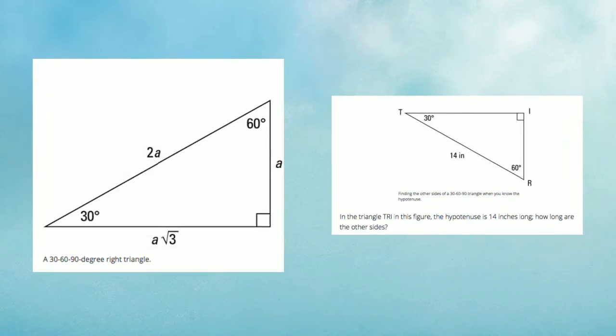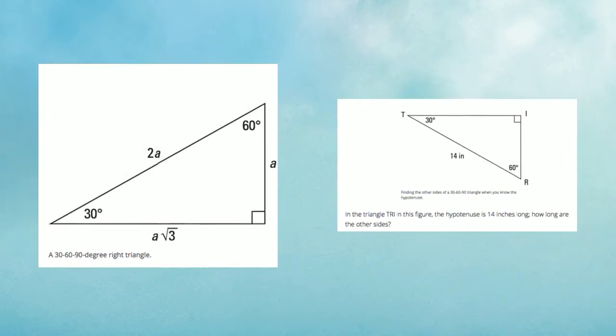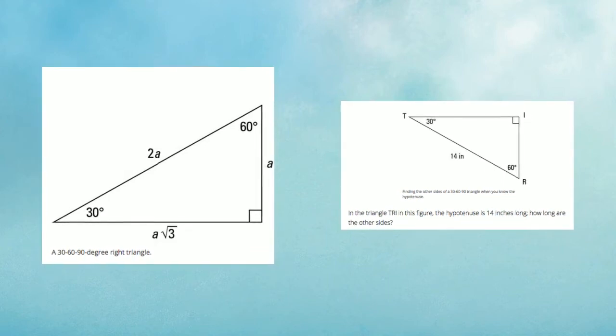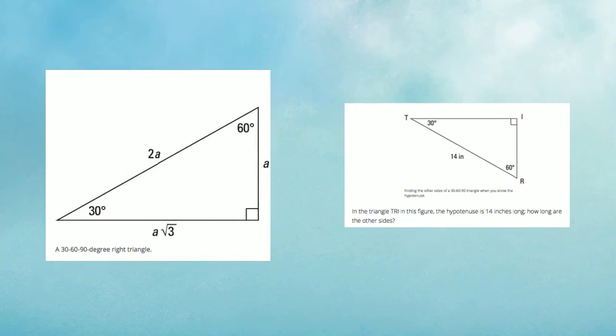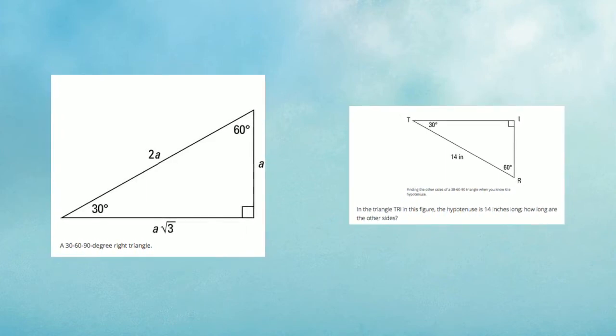We know that the hypotenuse is 14 inches long. And based off our ratios, we know that IR, the side length opposite to 30 degrees, is half of 14. So it's 7 inches long. And then TI is a root 3. So we multiply 7 by root 3. So TI is 7 root 3.